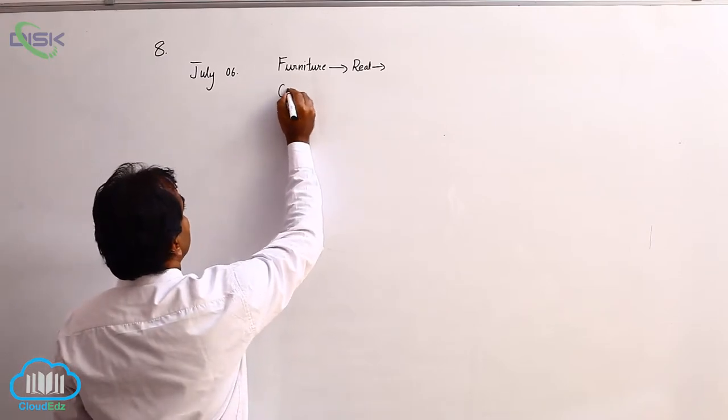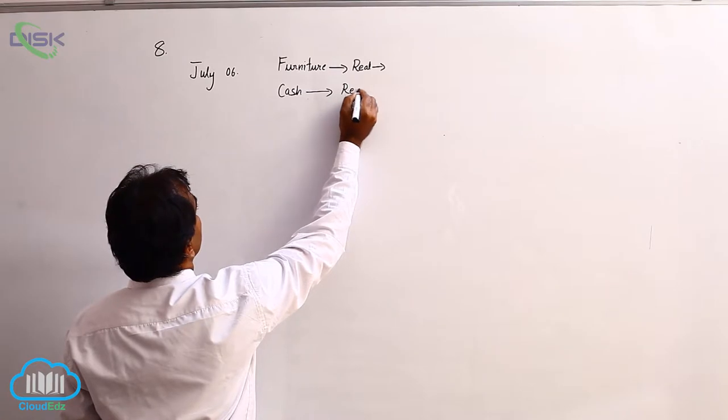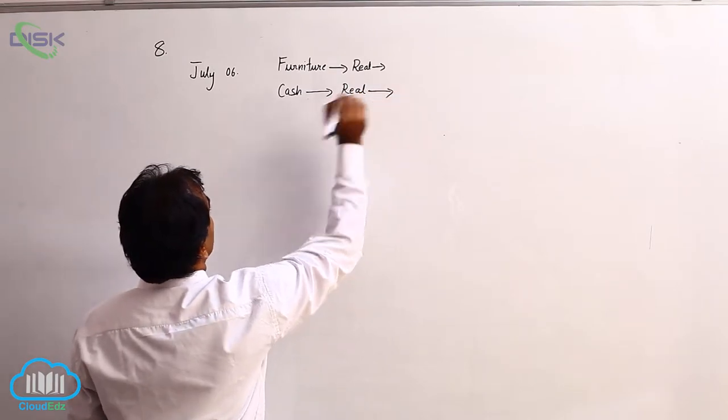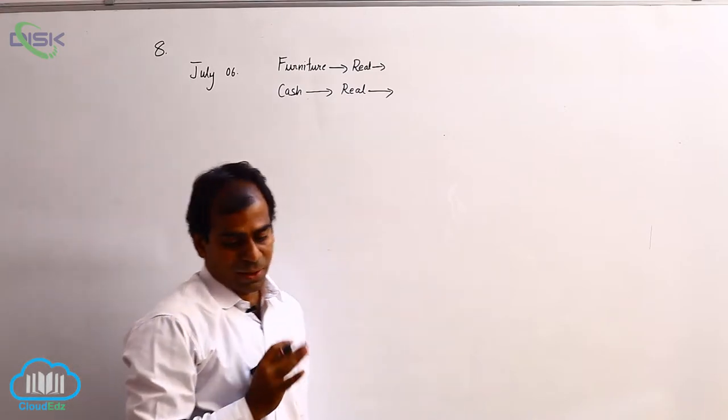Next, nothing is stated. You would have paid cash for it. So cash again is a real account and apply the rule of real account for cash to see if it is coming in or going out.